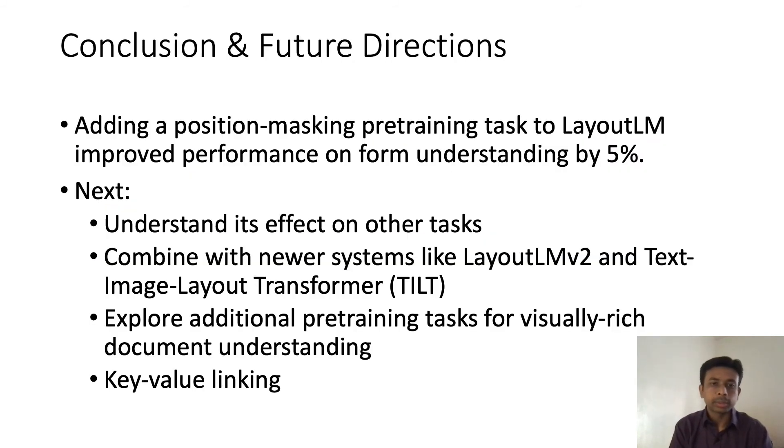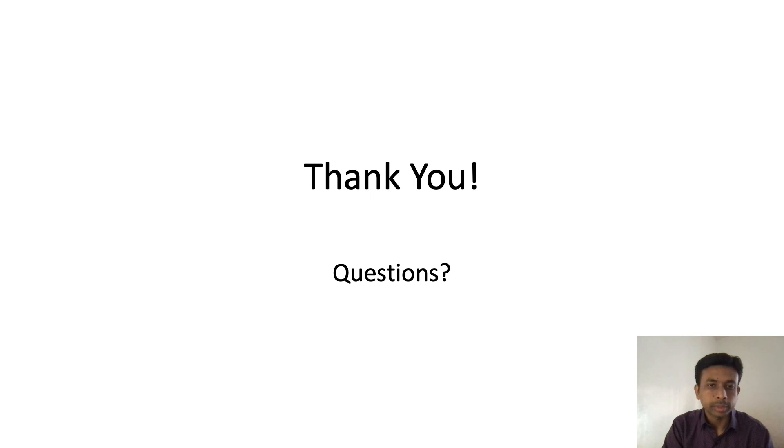We see that adding a position masking loss to the pre-training task improves the performance of LayoutLM model on form understanding by 5%. Next, we'd like to understand the effect of adding this loss function on other tasks. We can also combine this method with newer models like LayoutLMv2 and Text-Image Layout Transformer. We can also explore additional pre-training tasks for visually rich document understanding. In this paper, we worked on extracting keys and values. We can also try to link the extracted keys and values next. Thank you for your time. Let me know if you have any questions.